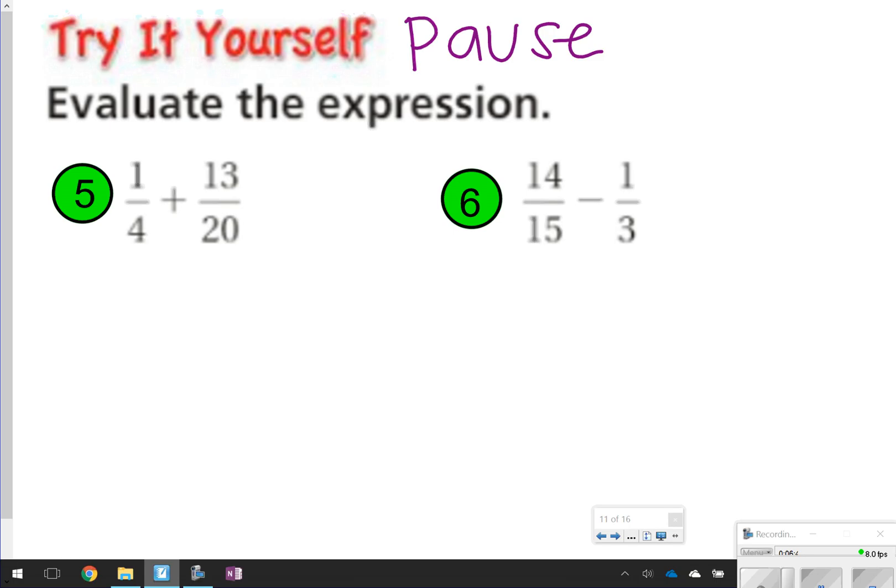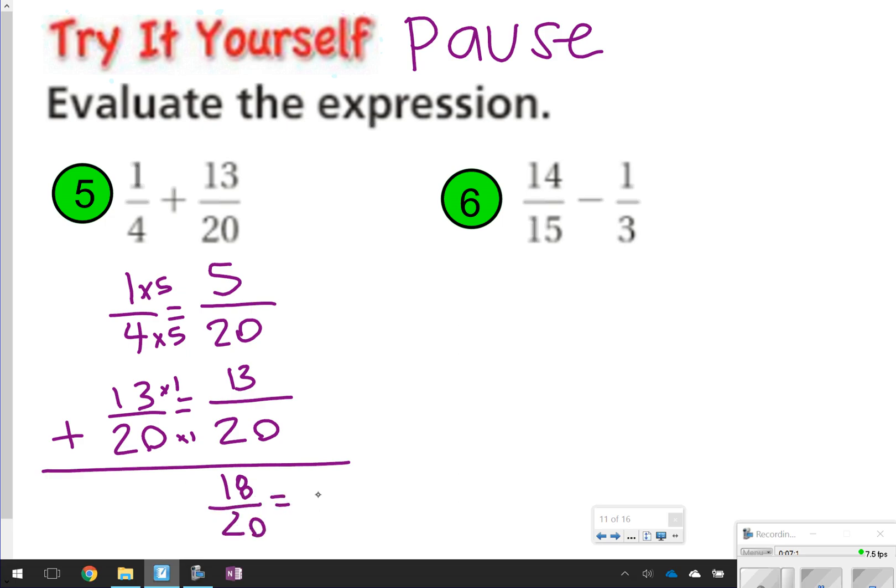So number 5, we need a common denominator, since we're adding 1 fourth and 13 twentieths. 4 and 20 both can have the common denominator of 20. So I'm just going to keep that one the same. 4 goes into 20, 5 times, so 1 times 5 is 5. 20 goes into 20, 1 time, so 13 times 1 is 13. Add them together, I get 18 over 20, and then simplifying, I get 9 tenths. All I did there was just divide those both by 2. 9 tenths is my answer for number 5.